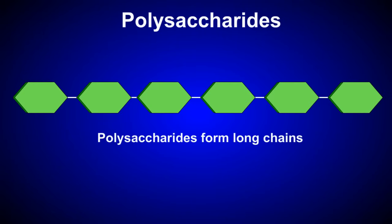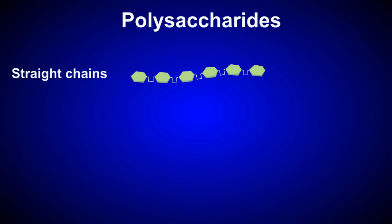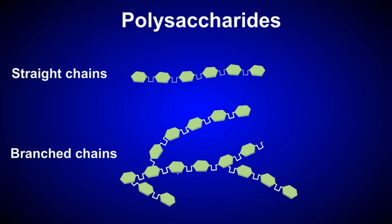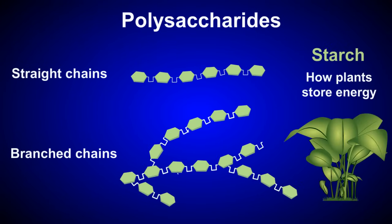Polysaccharides are formed when glucose monomers link together to form long chains. These long chains of glucose units are ideal for storing energy, and the chains can be straight or branched. Plants store energy in the form of amylose, which has straight chains, or amylopectin, which is branched.